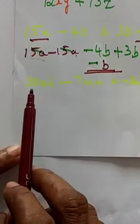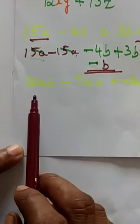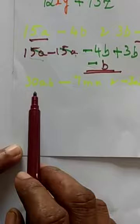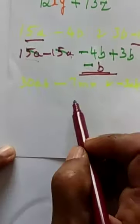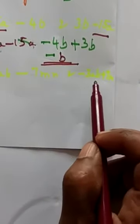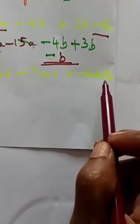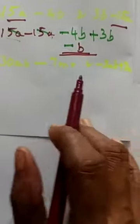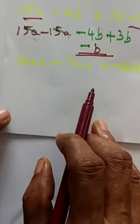Then they have asked us to add binomial, these two binomials. 30ab minus 7mn and minus 3ab plus 7m. What are the like terms?